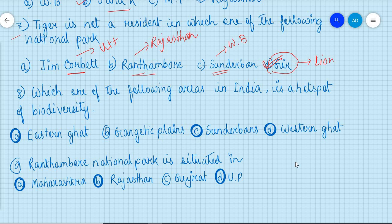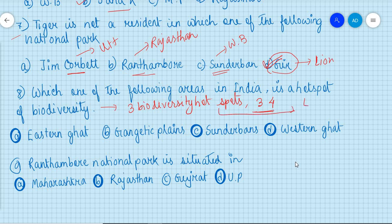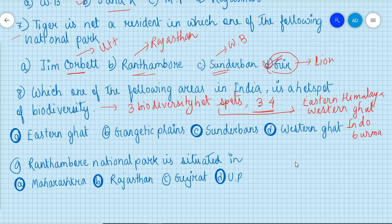Which one of the following areas in India is a hotspot of biodiversity? In India there are three biodiversity hotspots, and in the world there are a total of 34 biodiversity hotspots. The three hotspots in India are Eastern Himalaya, Western Ghats, and Indo-Burma. So Eastern Ghats is not correct — it is Eastern Himalaya. Gangetic plain and Sundarbans are also not hotspots. The correct option is Western Ghats.